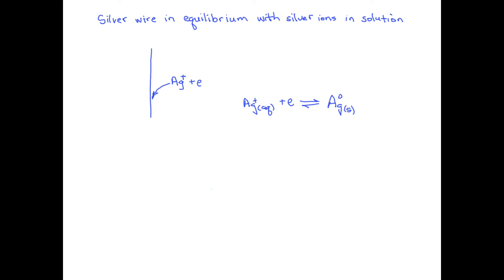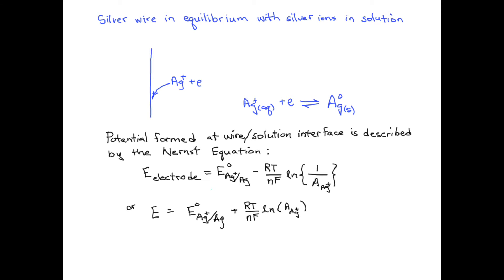A potential can also develop at a metal surface, such as a silver wire, if it is placed in contact with an aqueous solution containing a fixed concentration of silver ions. In this case, electrons are transferred between the metal surface and ions in solution until an equilibrium is reached. The potential that develops on the surface is a direct function of the silver ion concentration, or more properly, the silver ion activity in solution, as described by the Nernst equation.